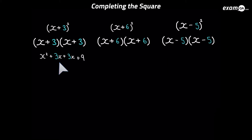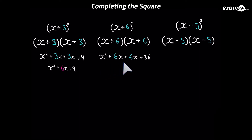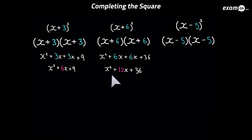In the first one, you should have got x squared plus 3x plus another 3x plus 9. And of course you can simplify that, and you get x squared plus 6x plus 9. Looking at the second one, you should have got x squared plus 6x plus 6x again, plus 36. Simplifying that down, you get x squared plus 12x plus 36.